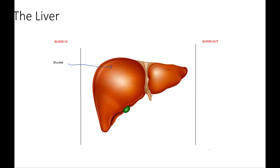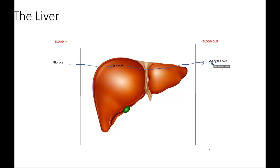If there is too much glucose inside your body, that glucose is converted to a storage substance called glycogen. After the blood leaves the liver, the cells can now use what is left. The glucose that passes through that is not converted to glycogen leaves the liver and is now used by the cells for respiration to give the cell energy.